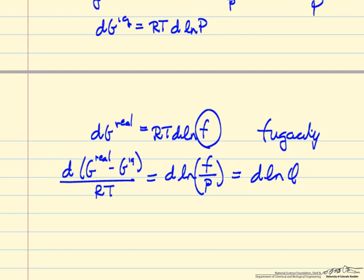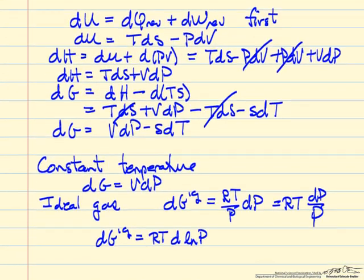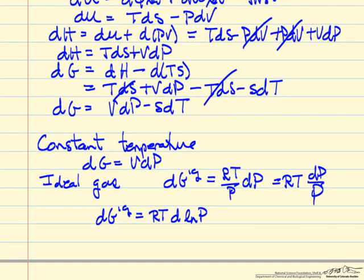So if we were to subtract these two equations, the real and the ideal, and just divide by RT to make dimensionless, then the right side we'd have D log fugacity over pressure, and this is the fugacity coefficient, a dimensionless variable.